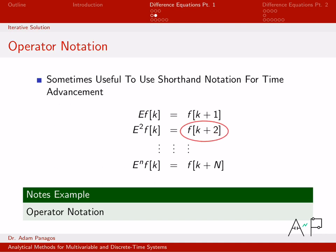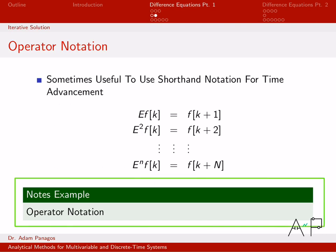So for instance, instead of writing down f of k plus 2, we're going to write down E to the 2 times f of k. And this is going to be our shorthand for writing down time advances. So let's do a few examples of this operator notation. Go back and look at some of the difference equations that we've seen in the previous videos and rewrite them in this new notation.